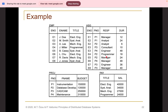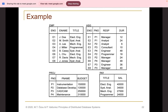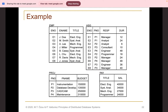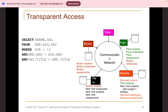Parallel database management systems are different from distributed database management systems but are still relevant. There is no concept of geographically distributed databases here — this is more about having multiple database management systems running in parallel, aligning with cluster computing. This gives high scalability and performance with no communication latency or network complications, but availability and single point of failure can be issues.